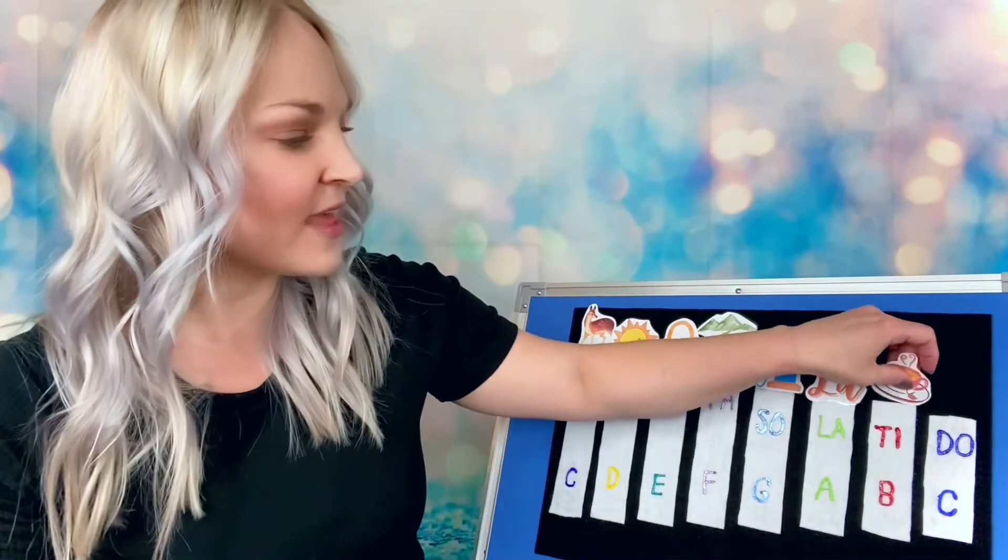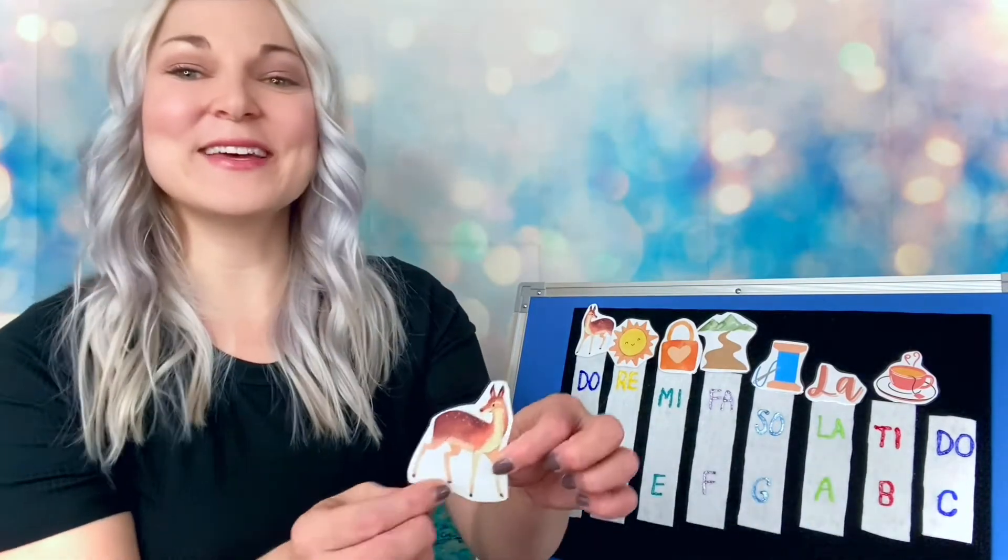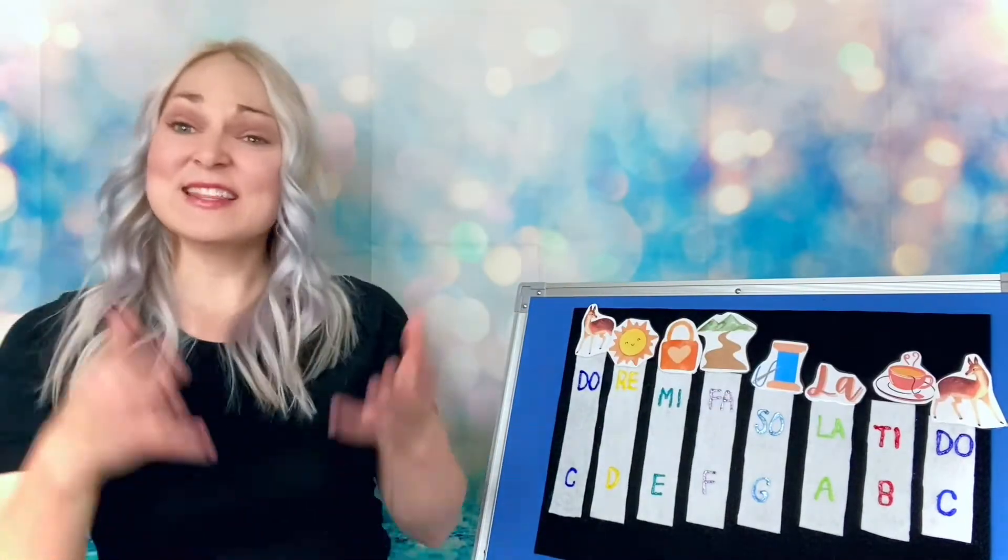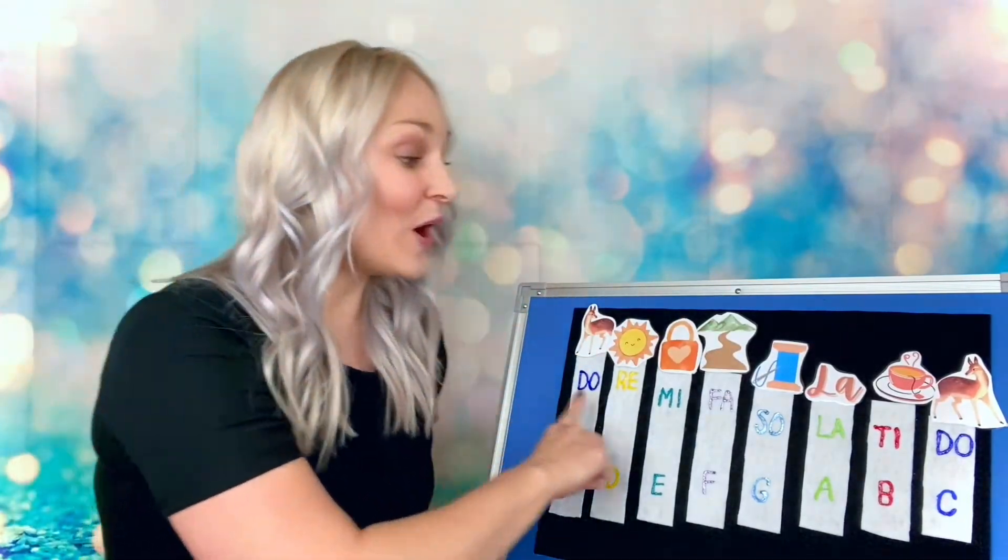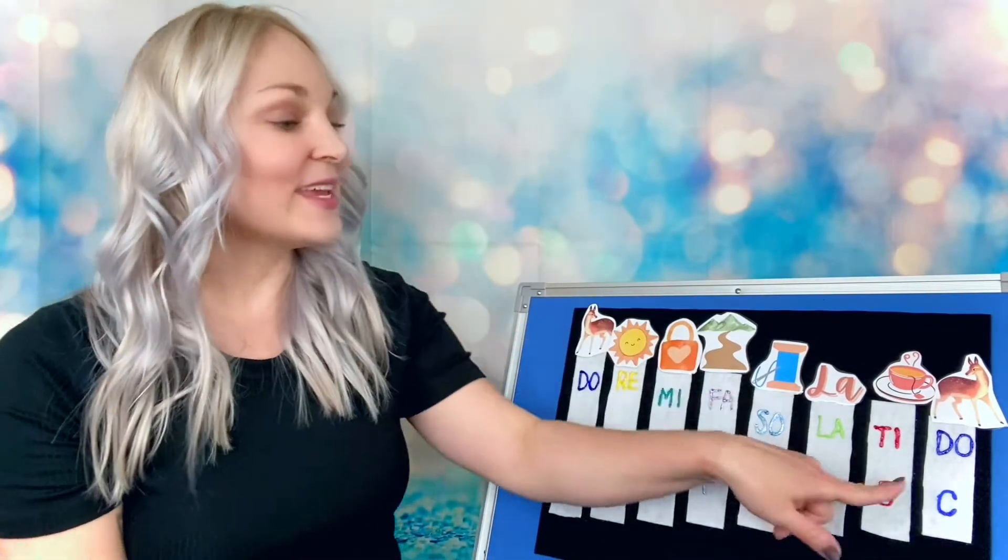And then that brings us back to dough. So we have another deer for dough. And once we sing this song, once we go through all of our notes, we're going to have sung an entire scale. It's just like going down the stairs all the way, each note of the musical scale.